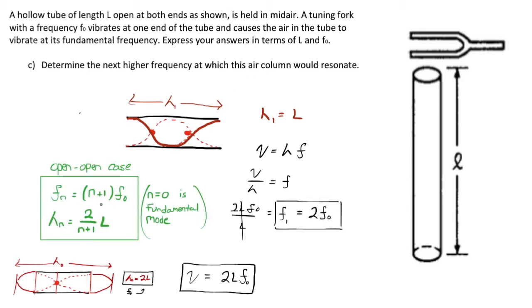Yes, in the open-open case, fn is simply equal to n plus 1 times f₀, where n equals 0 is the fundamental mode. This will tell you that f₀ is equal to 1 times f₀. And λn, the wavelength associated with each harmonic, is equal to 2 over n plus 1 times the length of your tube. And with that information you may calculate the properties of whatever size tube you would like as it pertains to the standing waves of air within it.